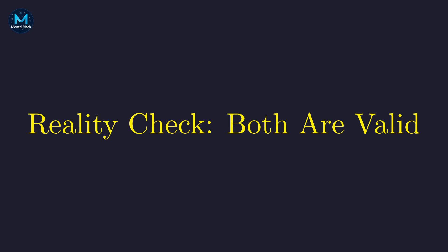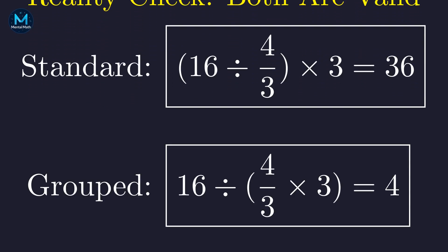So what's the truth? Well, if we follow the strict order of operations, we get 36. But the notation itself is ambiguous enough that both interpretations feel reasonable. The standard convention gives 36. But when fractions interact with adjacent operations like this, the notation becomes genuinely ambiguous.